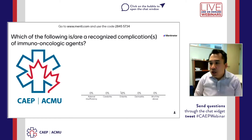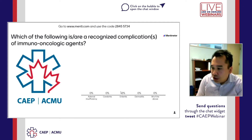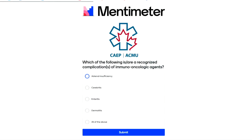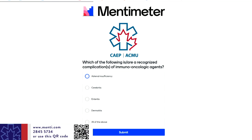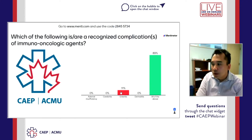The next polling question: which of the following are recognized complications of immuno-oncological agents? A) adrenal insufficiency, B) cerebritis, C) enteritis, D) dermatitis, E) all of the above. The correct answer is all of the above. Cerebritis is actually a very rare entity, but I have had a colleague experience a patient with this complication.